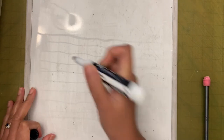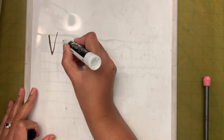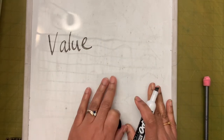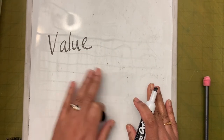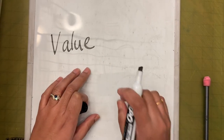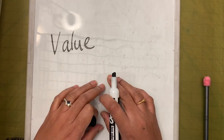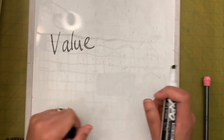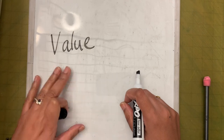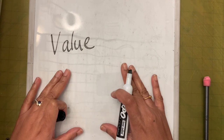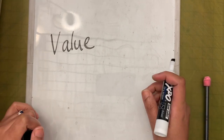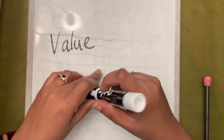So let's first talk about value. You would be thinking, what is value? Is it the value that you learn in math? No, this is the value in art. In art, value means how light or dark a color is. So what does it mean? It means how light or dark a color is.